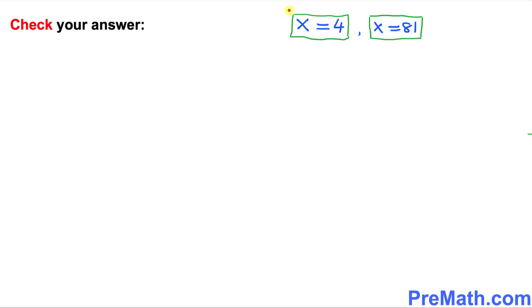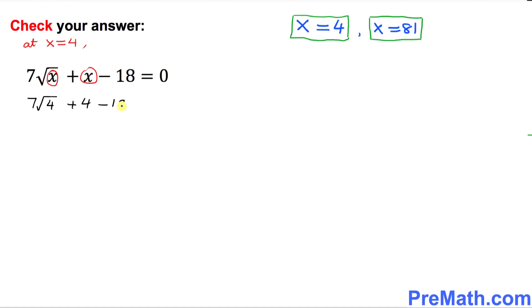So let's try this first one x equal to 4. Now we're going to check our answer at x equal to 4. So wherever you see x replace it by 4. So that is going to simply become seven times square root of 4 and this is simply 4 minus 18. My question is is the left hand side equal to the right hand side which is zero. We know that square root of 4 is 2. So seven times 2 plus 4 minus 18. 14 plus 4 minus 18 question mark.